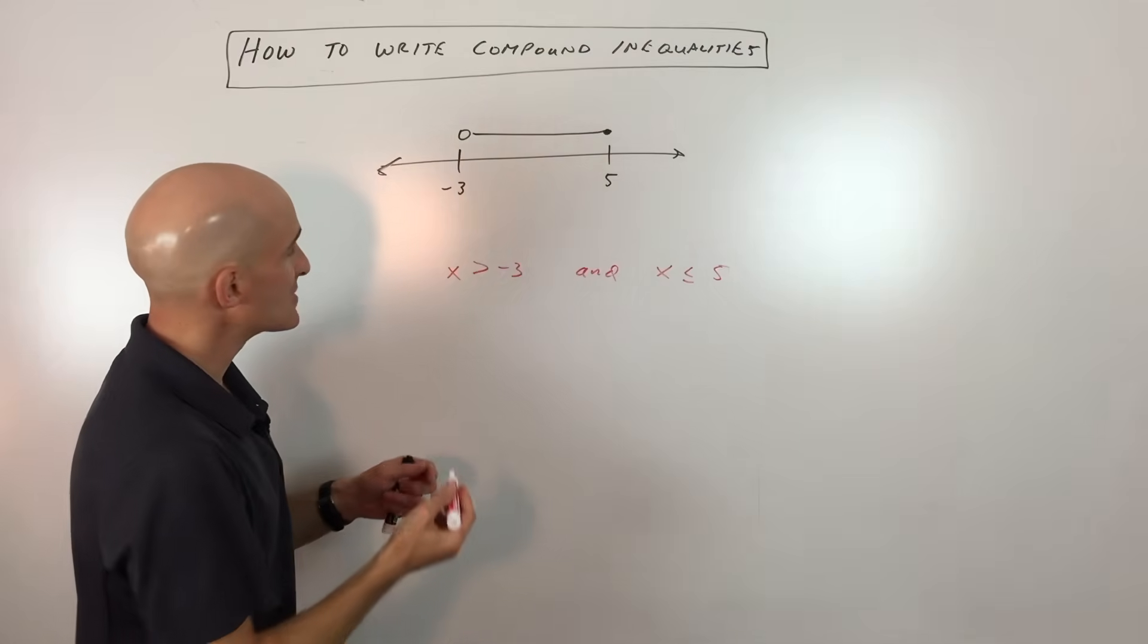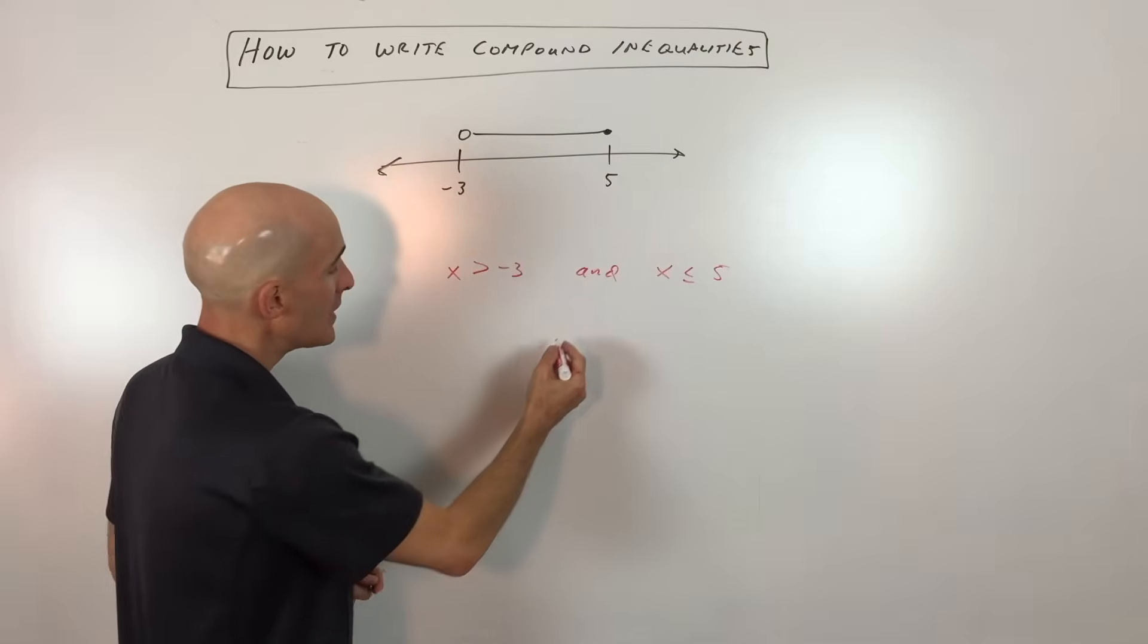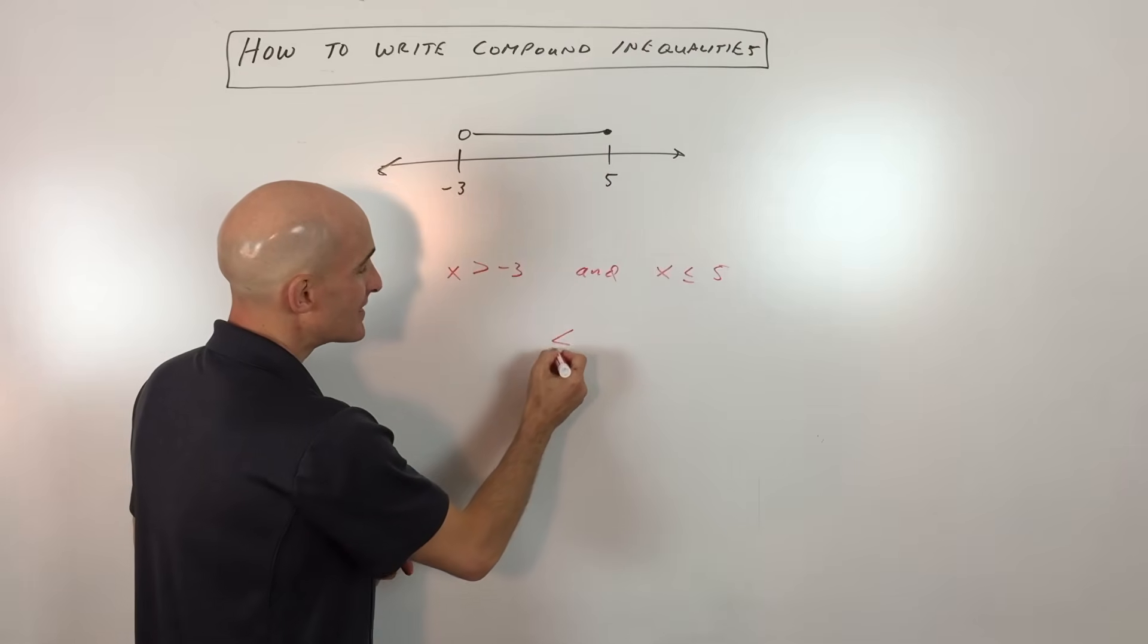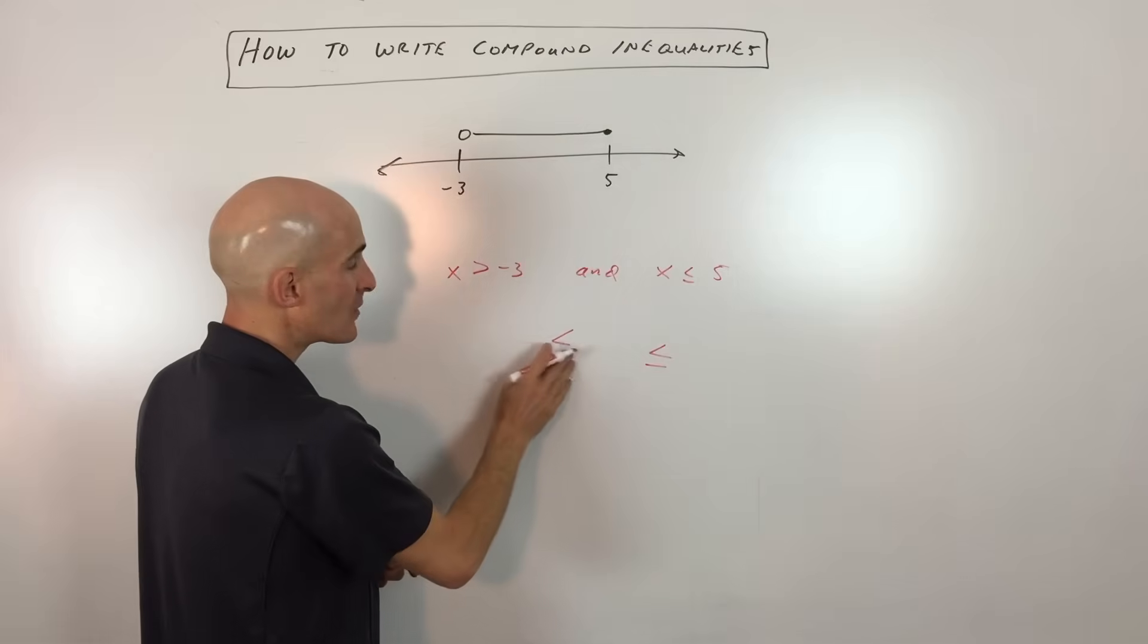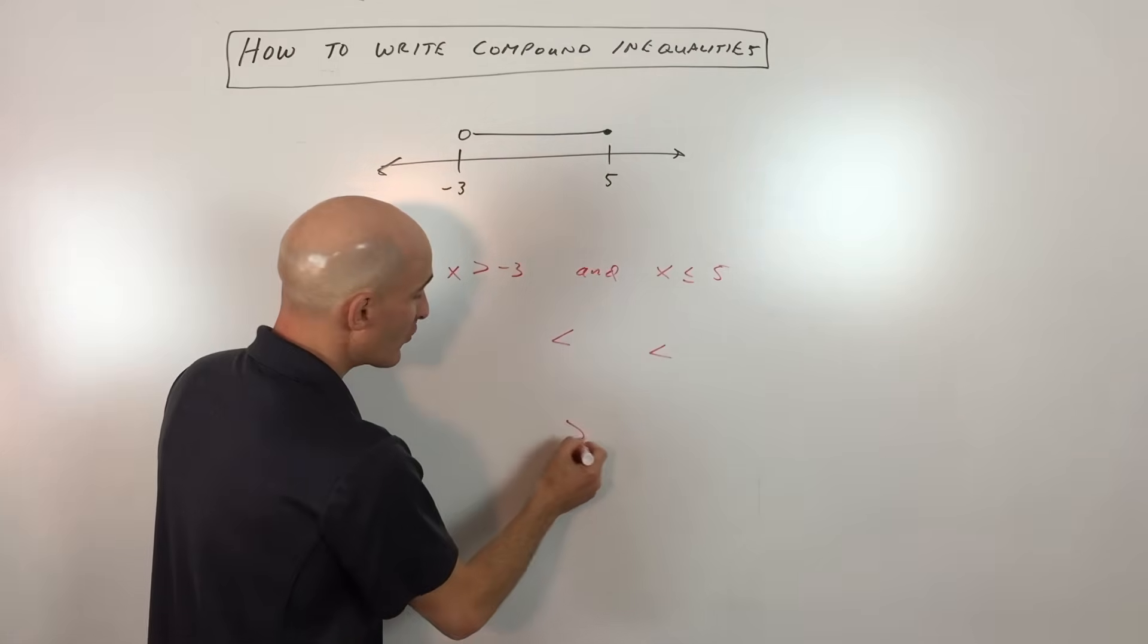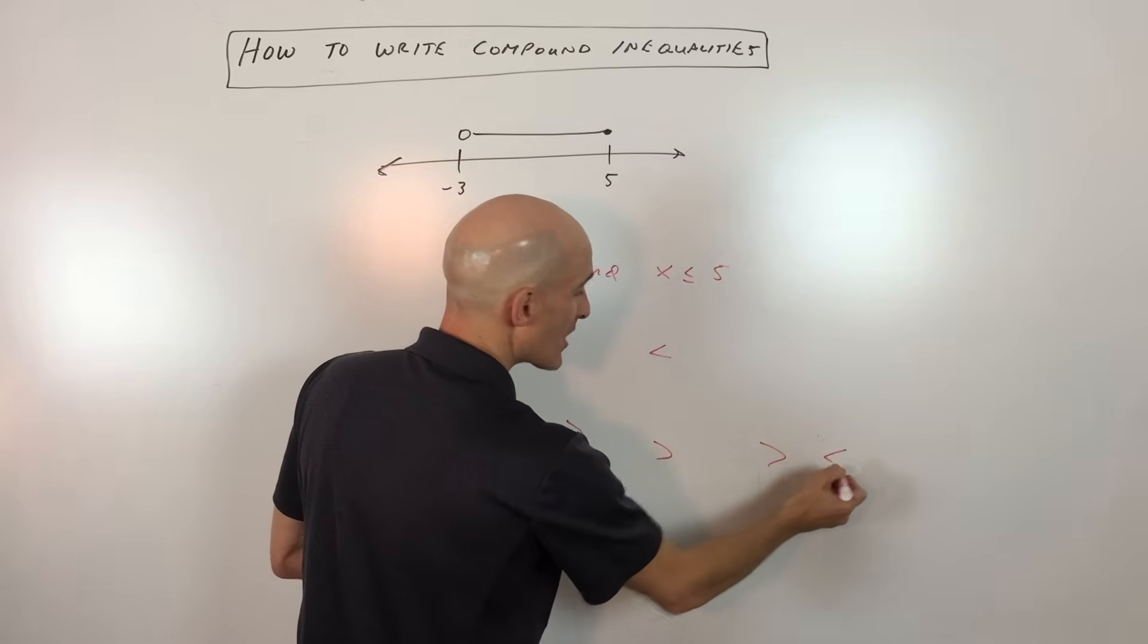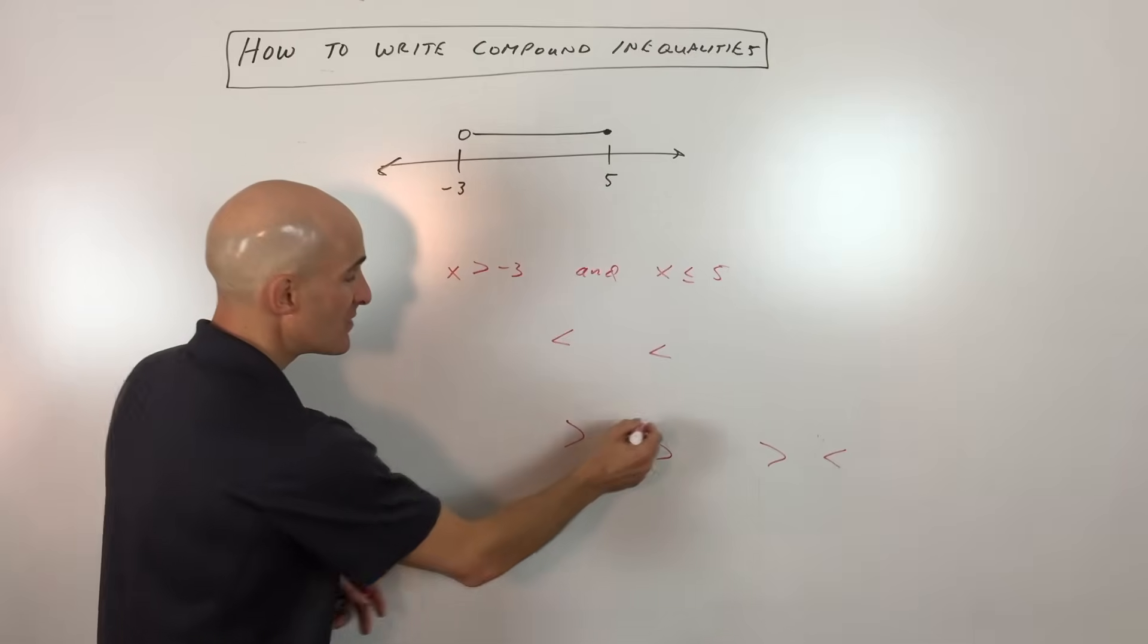Now what you're going to notice is that I'm going to put these together as a compound inequality. But when you write a compound inequality, you want to write it such that the inequality signs are less than or less than or equal to signs like this. You don't want to write it with greater than signs. You don't want to write it where one sign is pointing one direction and the other sign is pointing the other direction. These are not correct.